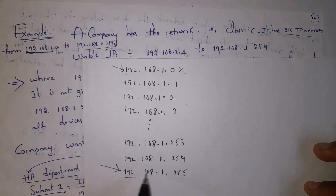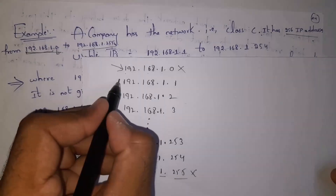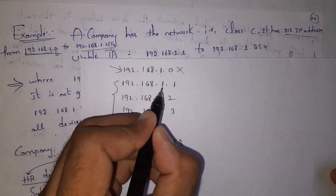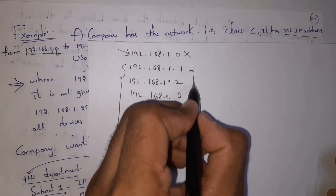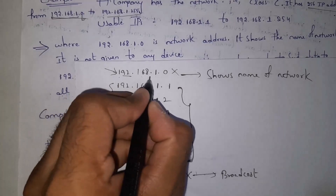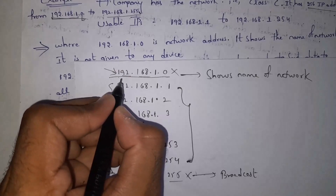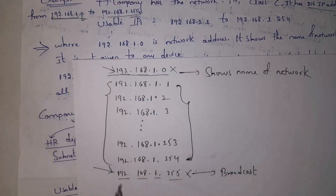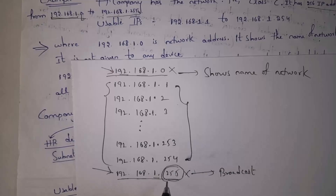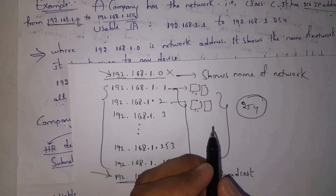Out of 256 IP addresses, we do not use the first IP address — 192.168.1.0 — and we do not use the last IP address — 192.168.1.255. The first IP address is used to show the name of the network and is not assigned to any device. The last IP address, 192.168.1.255, is used for broadcasting — if one device wants to send data to all devices in the network, it uses this IP address. So out of 256, only 254 devices are supported.